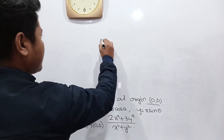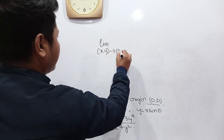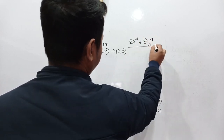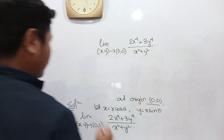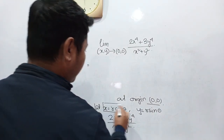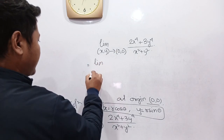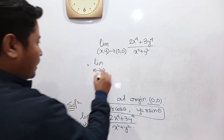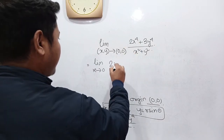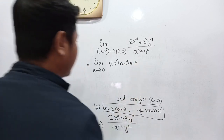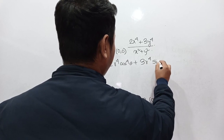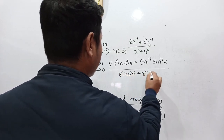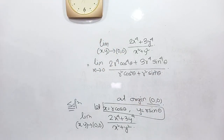So the limit as (x,y)→(0,0) of (2x⁴ + 3y⁴)/(x² + y²). Transforming using polar coordinates, this becomes limit as r→0 of [2r⁴cos⁴θ + 3r⁴sin⁴θ] / [r²cos²θ + r²sin²θ].